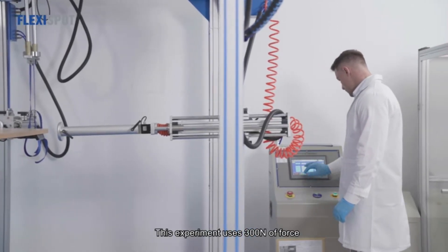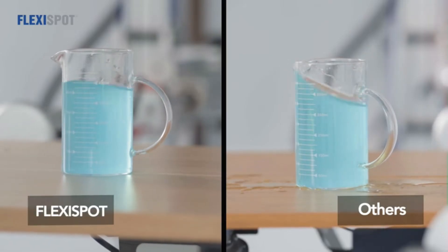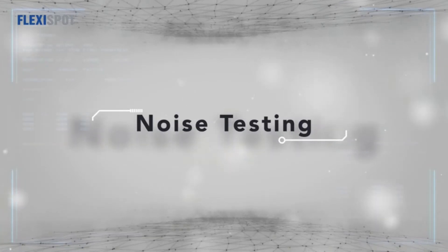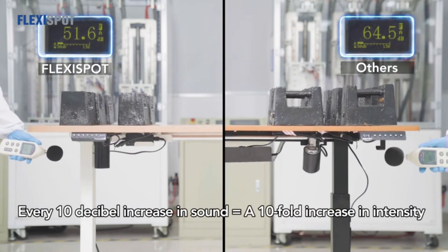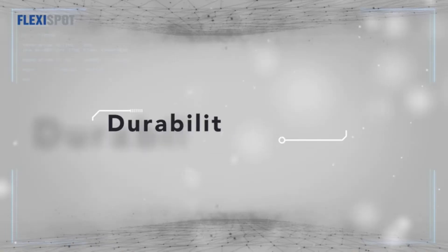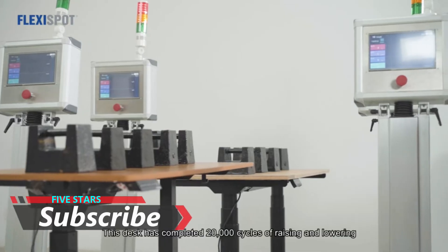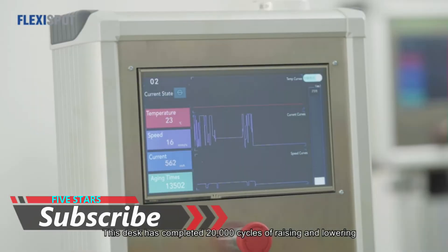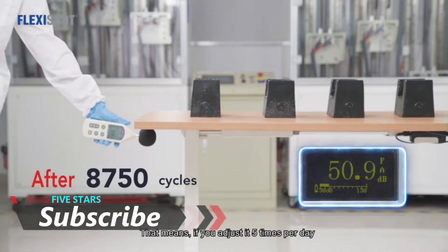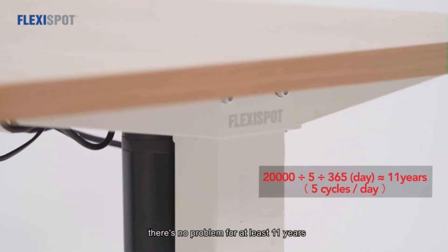This experiment uses 300 newtons of force. Now let's start the testing. This desk has completed 20,000 cycles of raising and lowering. That means if you adjust it five times per day, there's no problem for at least 11 years.